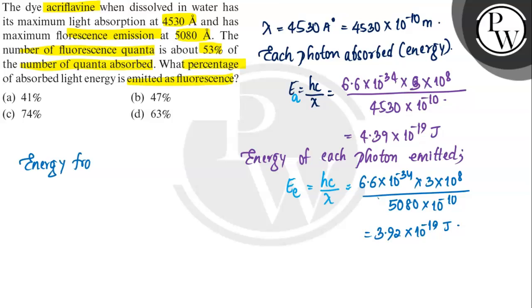Energy fraction emitted will be equal to 0.53 into 3.92 into 10 power minus 19 divided by absorbed value 4.39 into 10 power minus 19, into 100 because percentage is asked. So when we calculate, our percentage comes to about 47 percent.